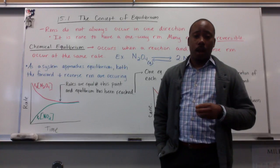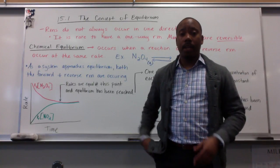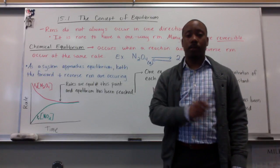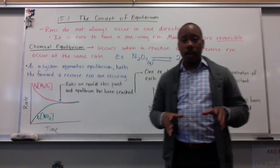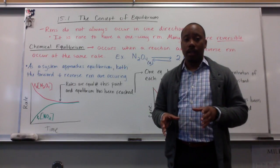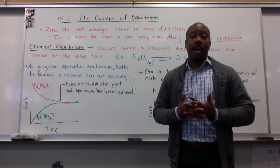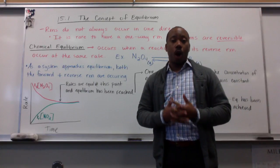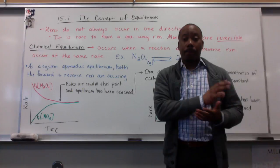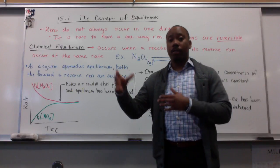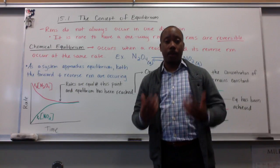Now, up until now, we've talked about chemical reactions only happening in one direction, from reactants to products. But that's not actually completely true. Reactions do not always occur in only one direction. In fact, it's actually rare for that to happen. Most reactions are reversible, meaning my reactants become products, and then my products can collide together to go back to the reactants. We call that chemical equilibrium.